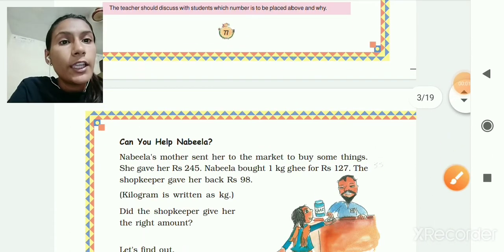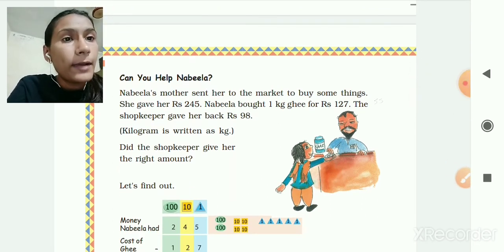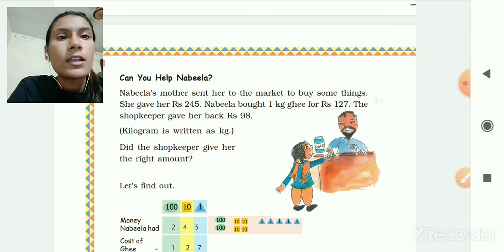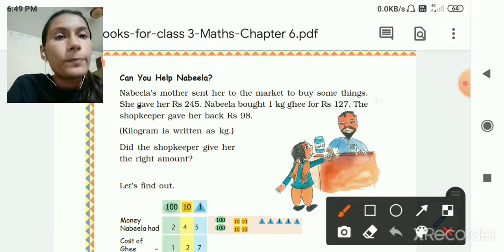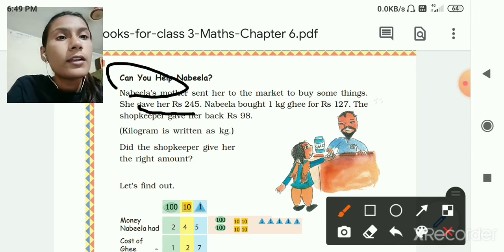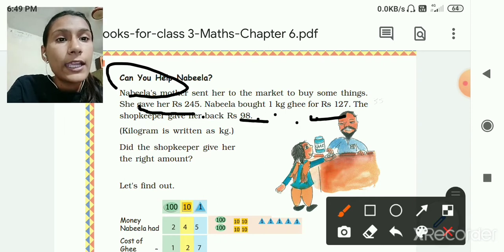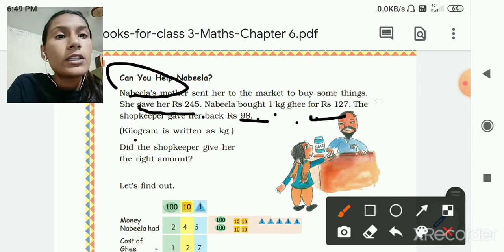Next, can you help Nabila? Nabila's mother sent her to the market to buy some things. She gave her Rs. 245. Nabila bought 1 kg ghee for Rs. 127. The shopkeeper gave her back Rs. 98. Did the shopkeeper give her the right amount, yes or no? Let's see.